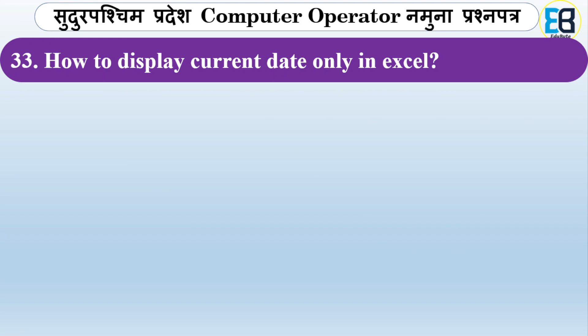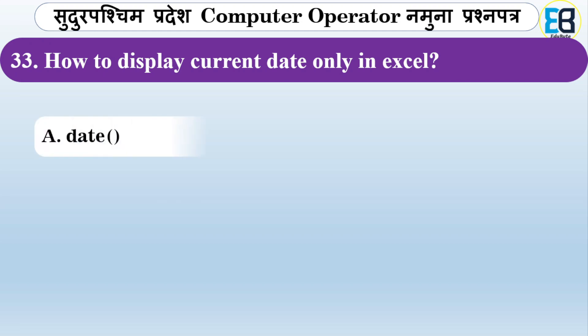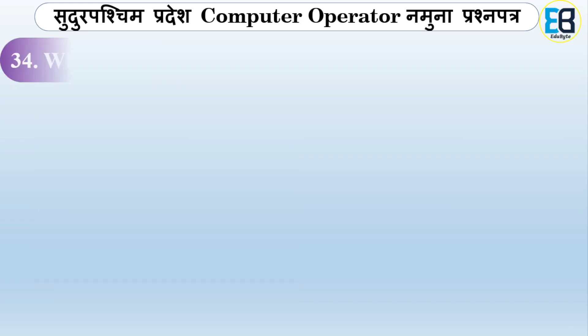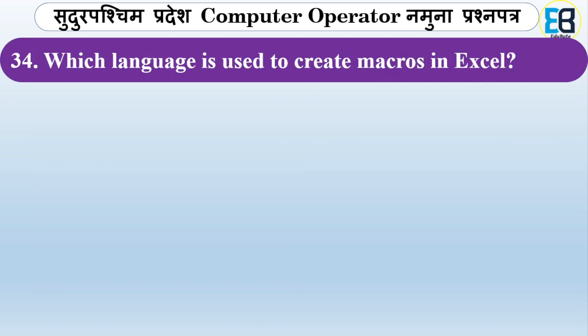How do you display the current date only in Excel? Options are TODAY(), NOW(), or TIME(). The correct answer is TODAY() — use the TODAY function to display only the current date.